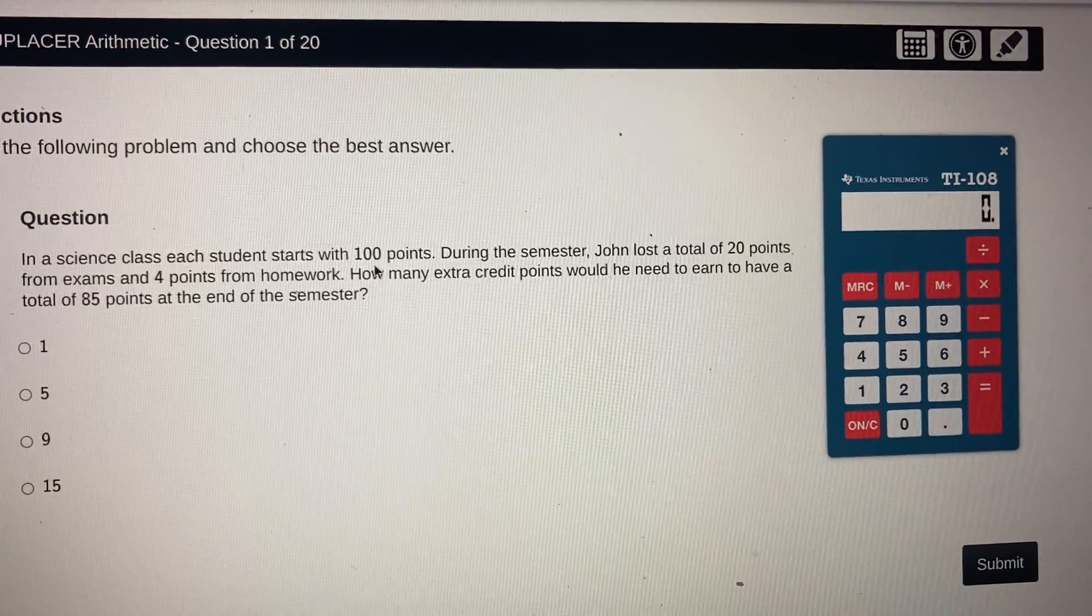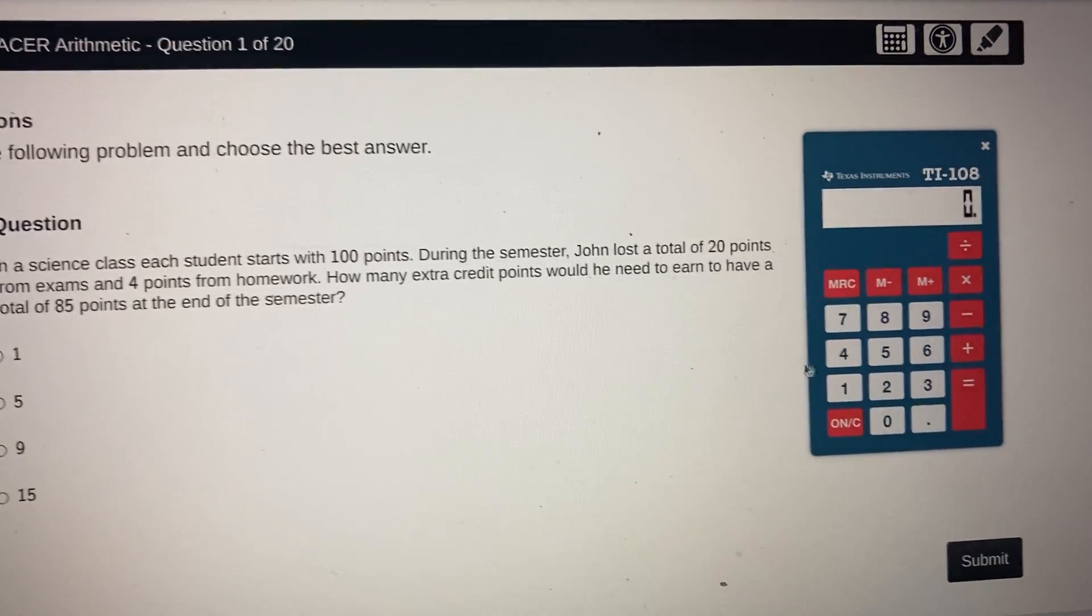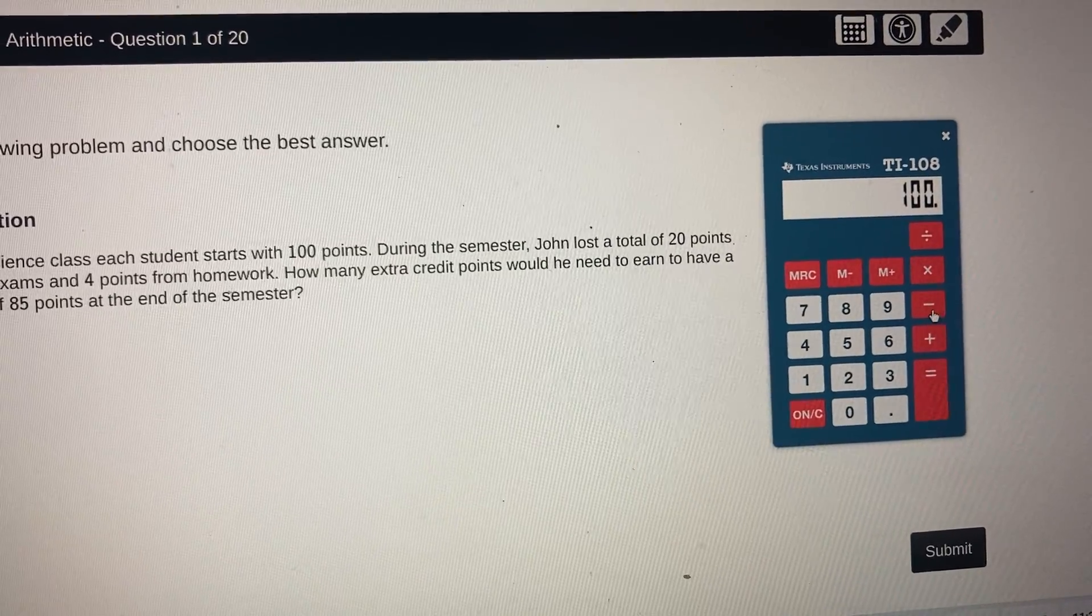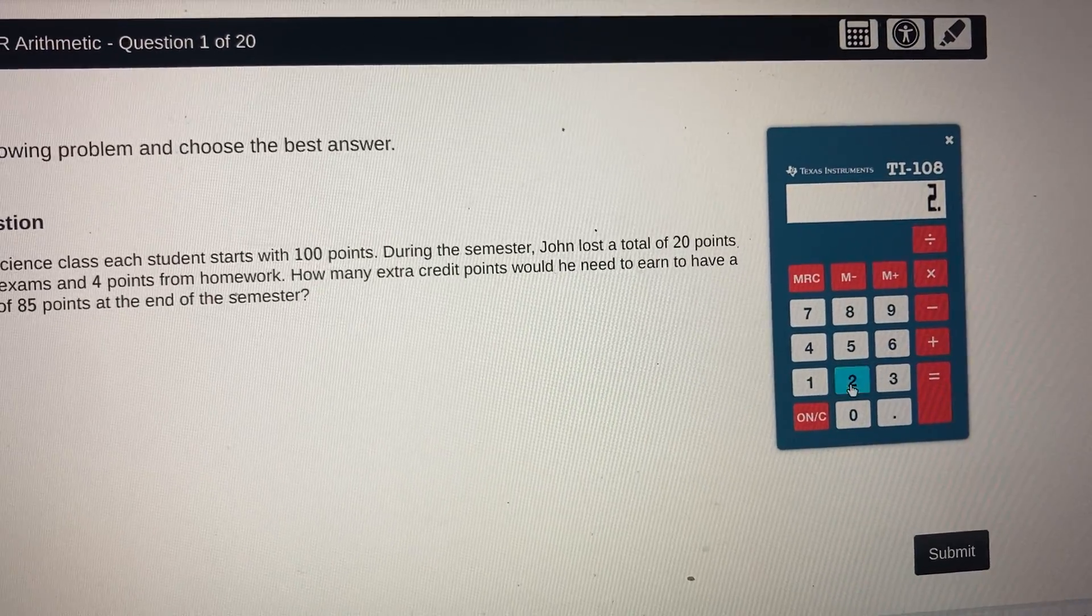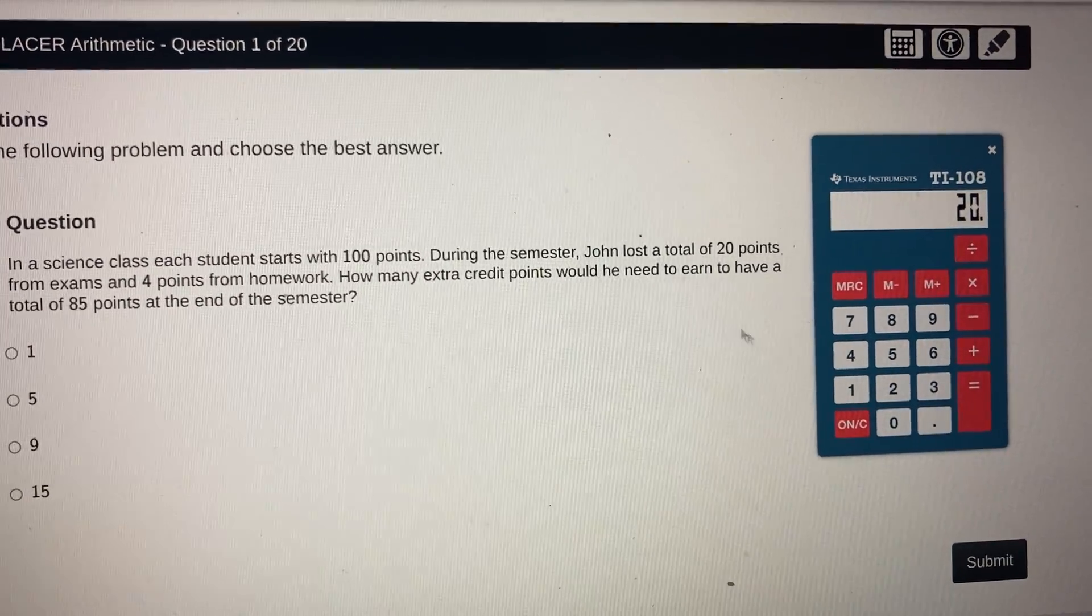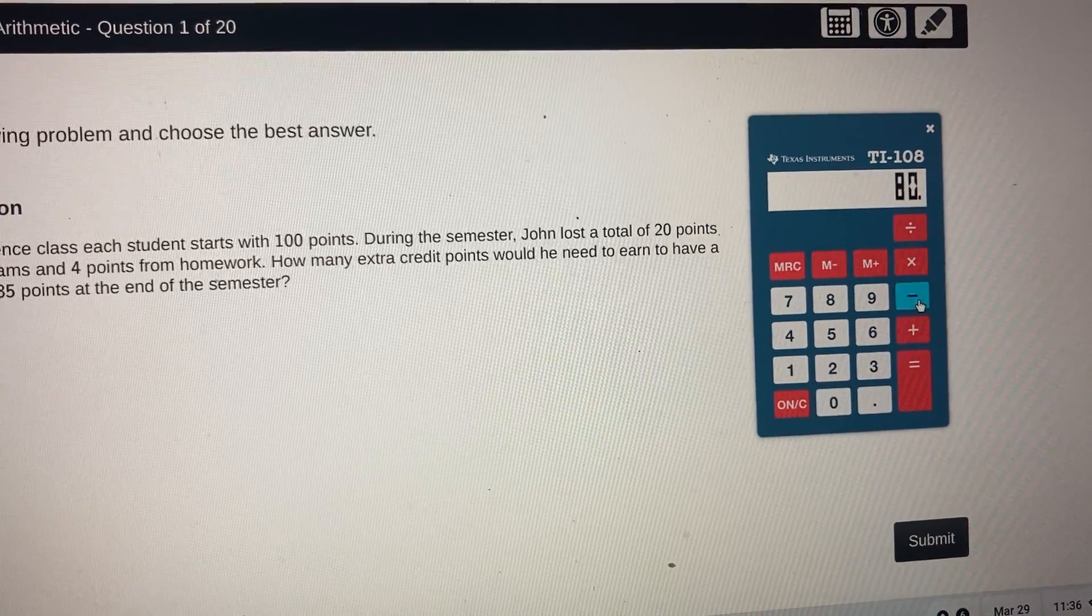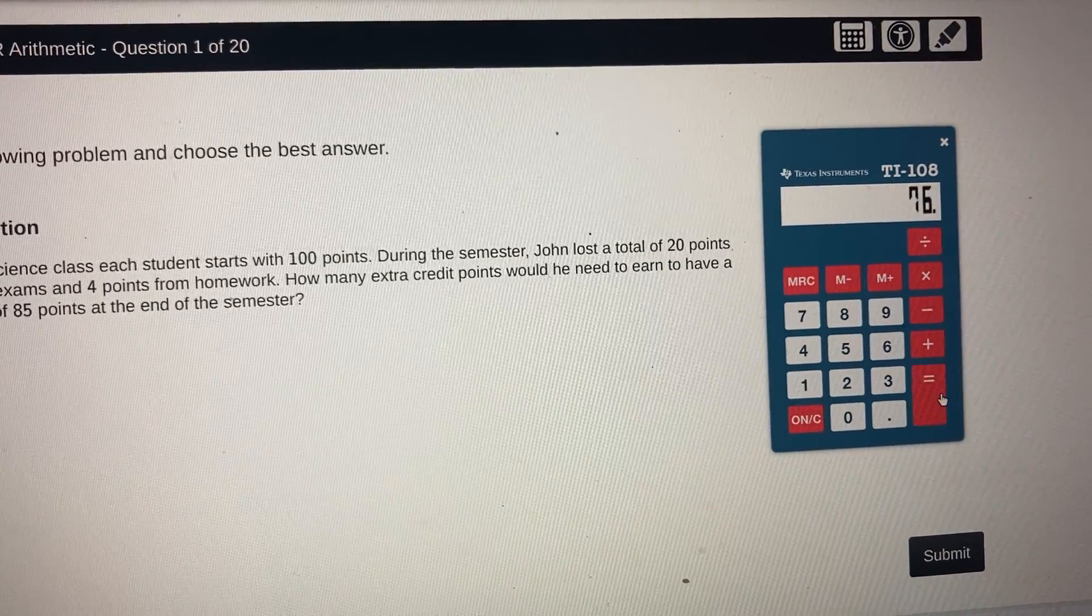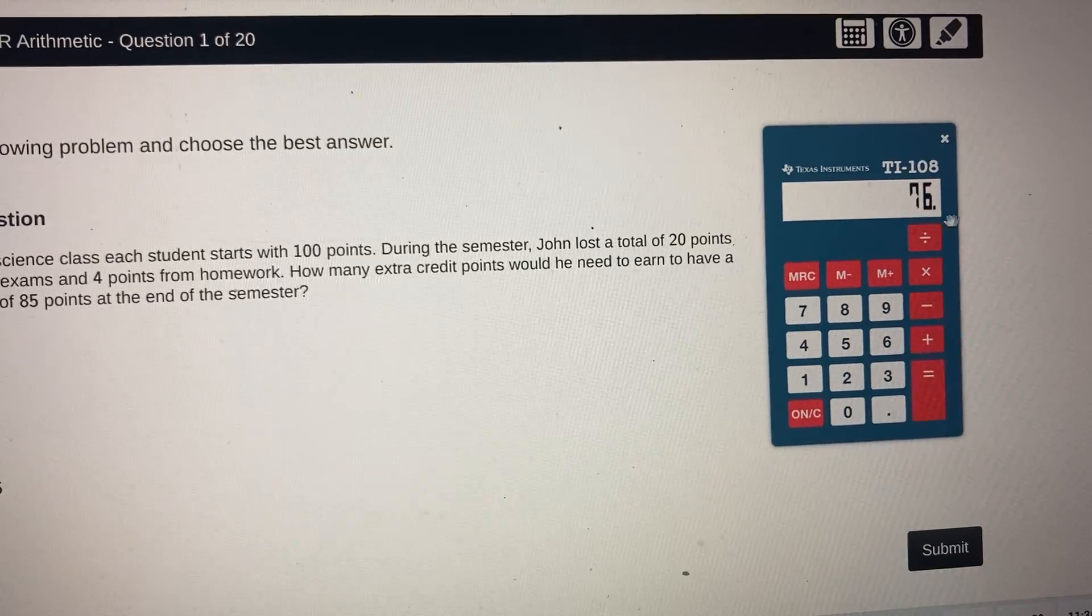When I'm solving this problem, 100 points minus 20, I would type in 100 minus 20. Then I also lose 4 points from homework, so I'm going to subtract again minus 4, and that is going to get me 76 points so far.